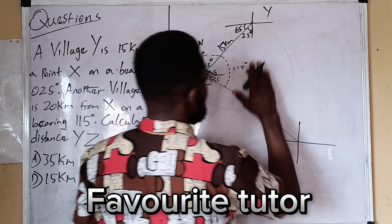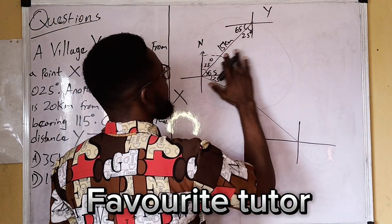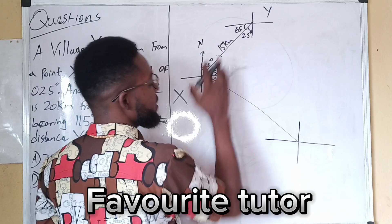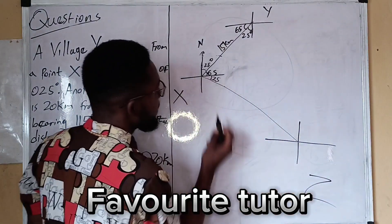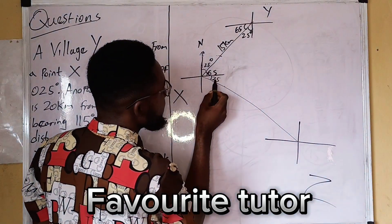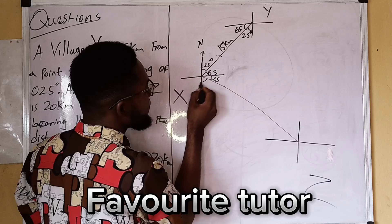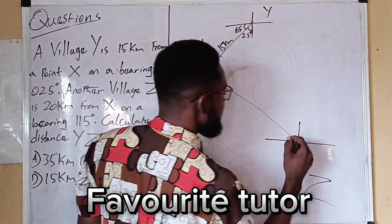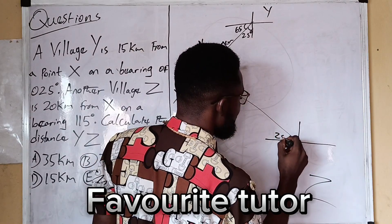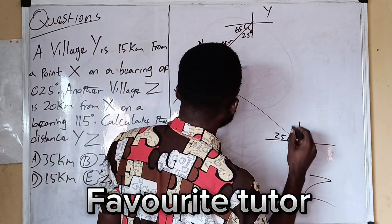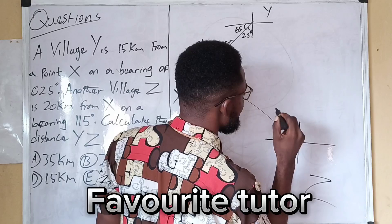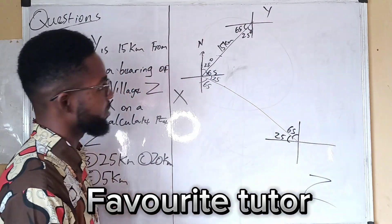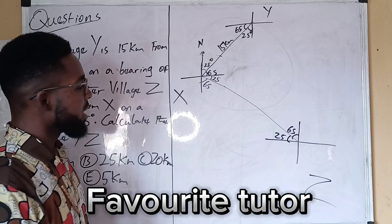This is Z. If here is 25, here will be 65 to make this quarter 90. We take alternate angles: here is 25, here is 65. Don't forget to take the alternate angles.